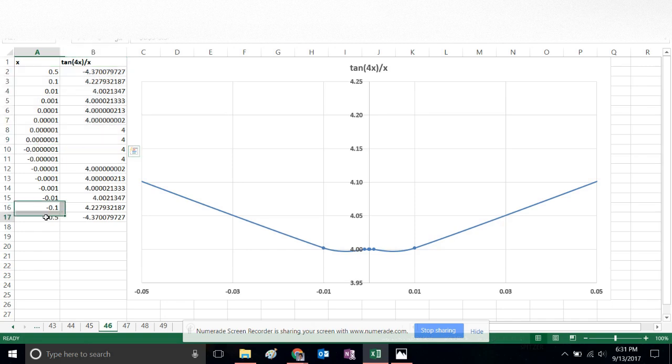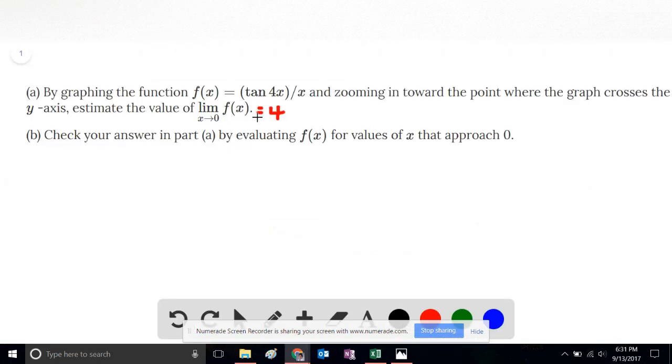And also, this is true from the left. As we approach 0 from the left, the function gets closer and closer to 4. And this confirms our solution that the limit as x approaches 0 of the function f is equal to 4.